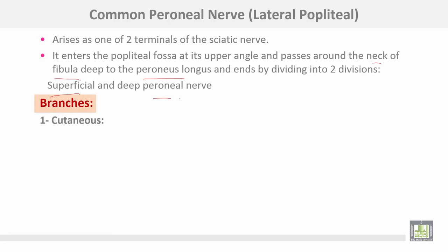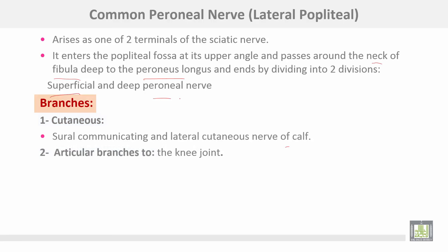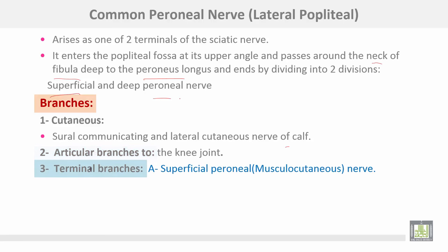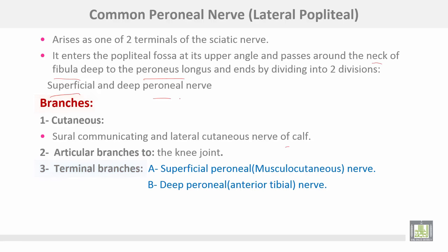Branches of the common peroneal nerve include cutaneous branches: the sural communicating nerve and the lateral cutaneous nerve of the calf, and articular branches to the knee joint. Terminal branches are the superficial peroneal nerve, also called the musculocutaneous nerve, and the deep peroneal nerve, also called the anterior tibial nerve.